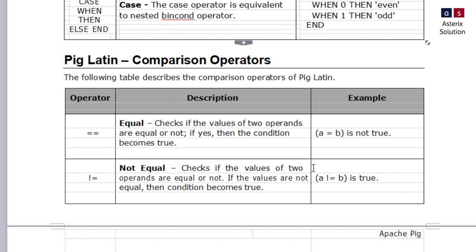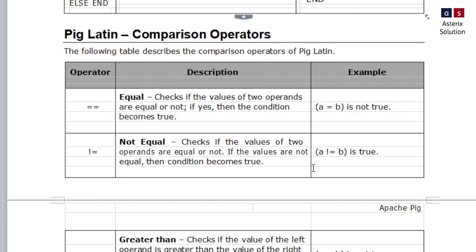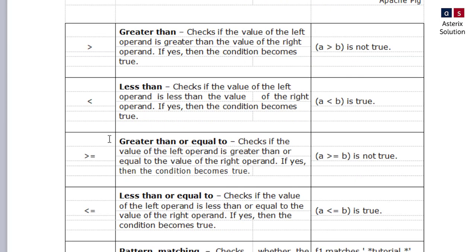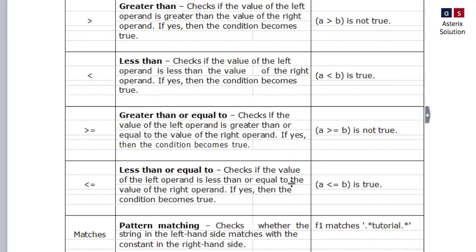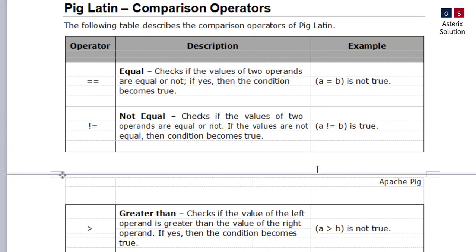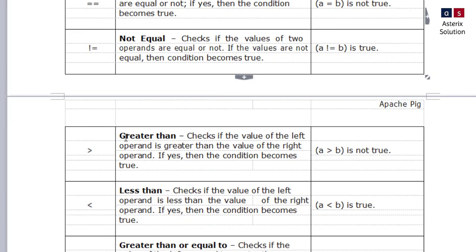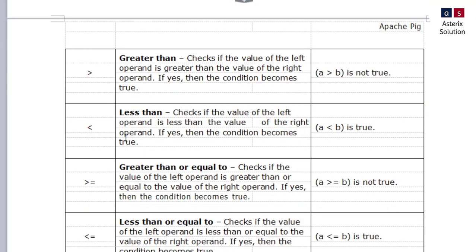Then you have comparison operators. Comparison operators are for checking whether two particular values are true or false. You have equals, not equals, greater than, less than, greater than equal to, less than equal to. The basic comparison operators: one is equals for checking equality, that is double equal to. Then you have not equals to check whether it is not equal to. Then you have greater than, which gives you whether the value is greater than or not. Less than is for checking less than.